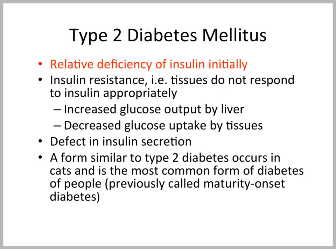A form similar to type 2 diabetes occurs in cats. Type 2 diabetes is now the most common form of diabetes in people. It was previously called maturity onset diabetes, but that is no longer true because we have so many obese children and adolescents. So this now no longer only occurs in older people — it can be seen in young people. We do see a similar form in the cat.